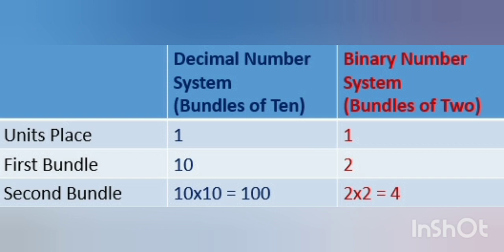So if we compare the two numbering systems for place values, this is what it will look like. See, units place is 1 for both. First bundle in decimal is 1 x 10 equals 10. While in binary, it is 1 x 2 equals 2.